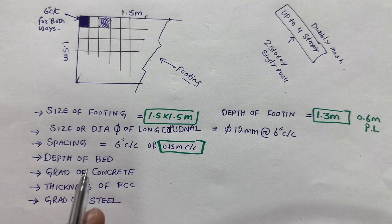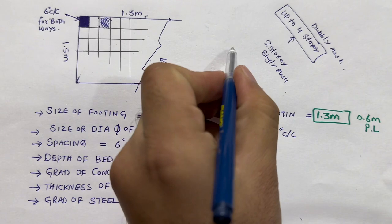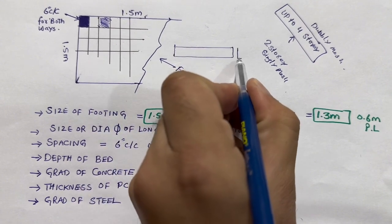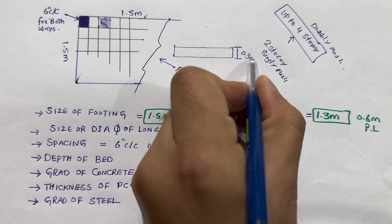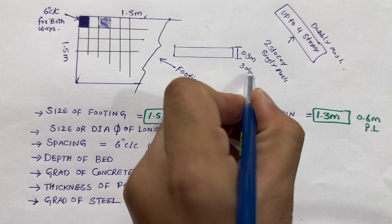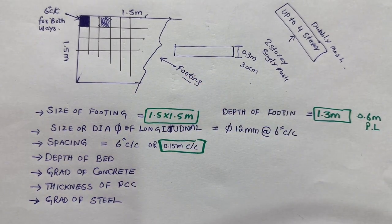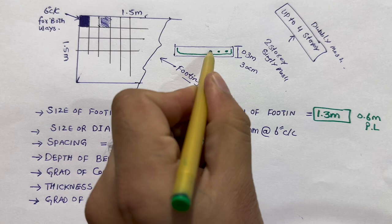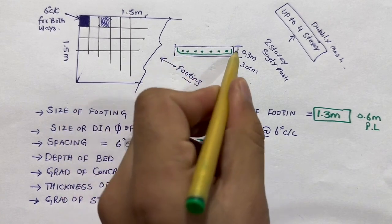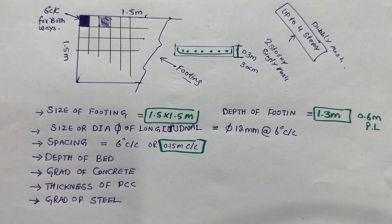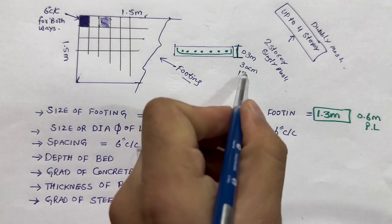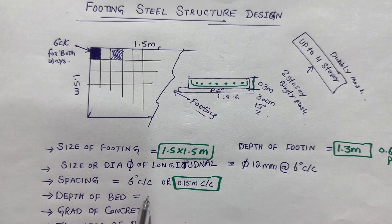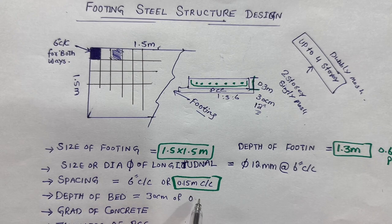Next, the depth of the bed. Let me show you the section for this footing. You can see this is the section — this is the bed depth. The bed depth should not be more than 0.3 meter, or you can say 30 centimeter. Inside the bed depth we have steel reinforcement. This thickness or depth you can keep up to 0.3 meter, or 30 centimeter, or 12 inches.